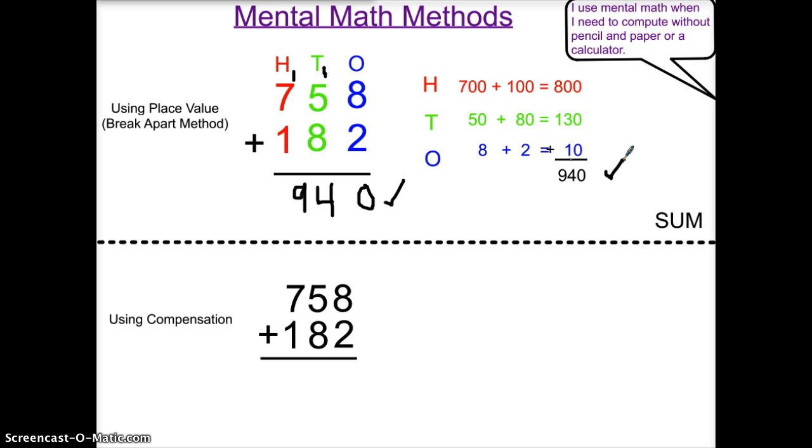Next, I'm going to show you compensation. The reason why compensation works in a problem such as this is that I can look at the 8 and 2 and realize I can make a 10. And as we know, adding 0s makes it easier to use mental math. So I'm going to break apart the number 182 into 2 and 180.